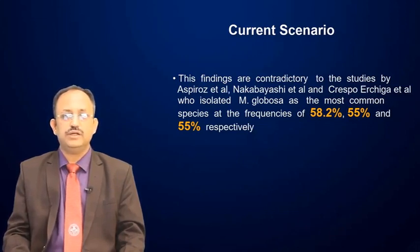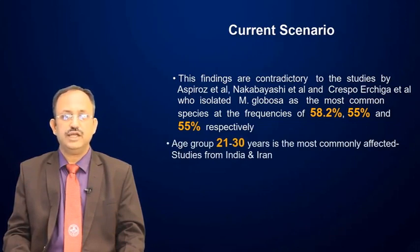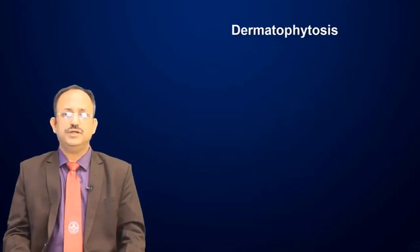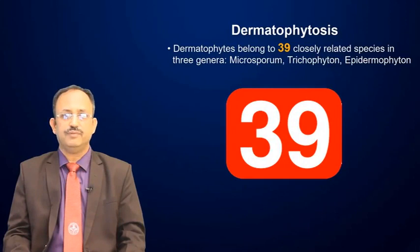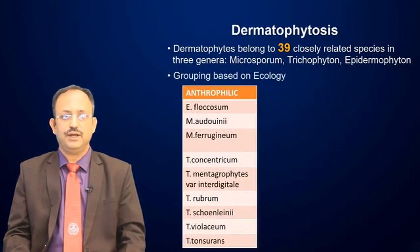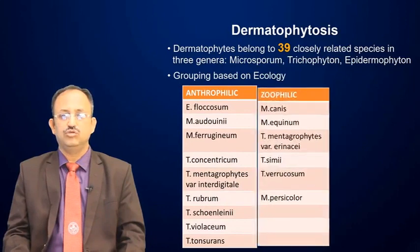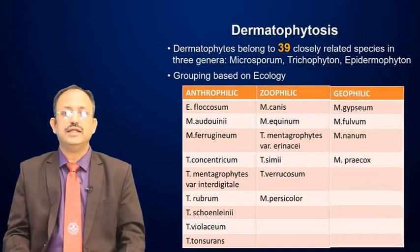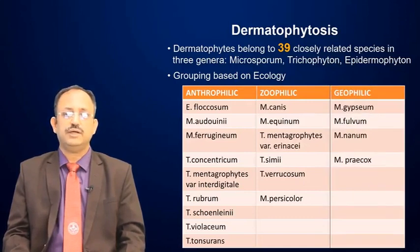It is common in young individuals; the age group of 21 to 30 years is the most commonly affected in many of these studies. There are many species mainly from three genera: Microsporum, Trichophyton, and Epidermophyton. Depending upon the ecology, we have anthropophilic species, zoophilic species — those which survive on animals — and geophilic species — those which survive in soil.